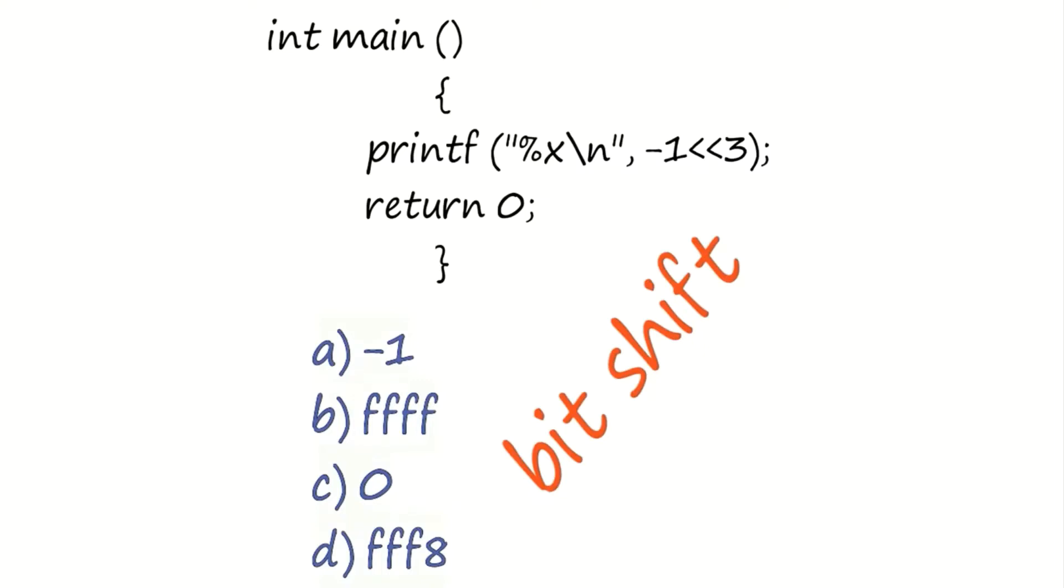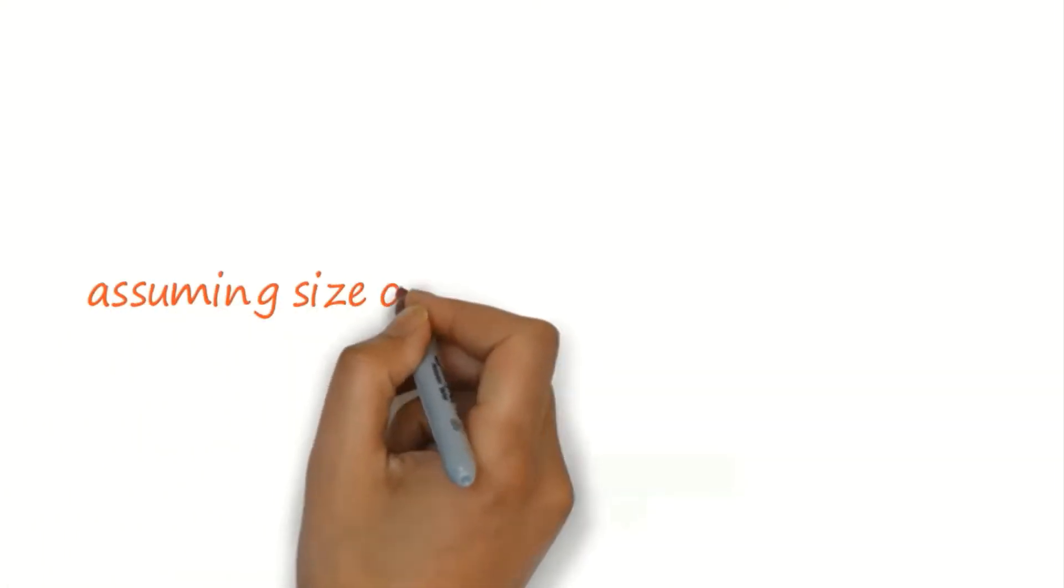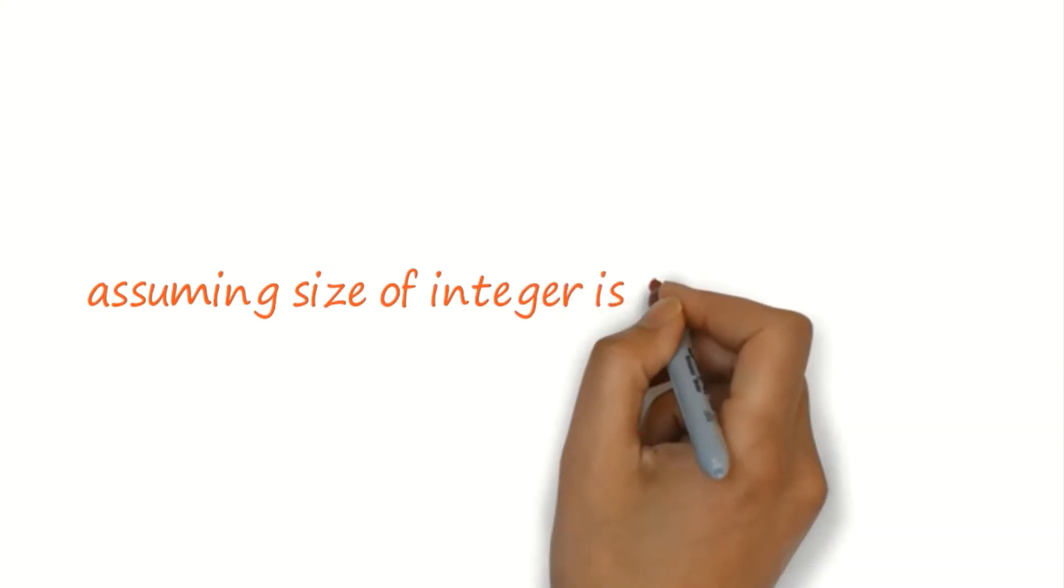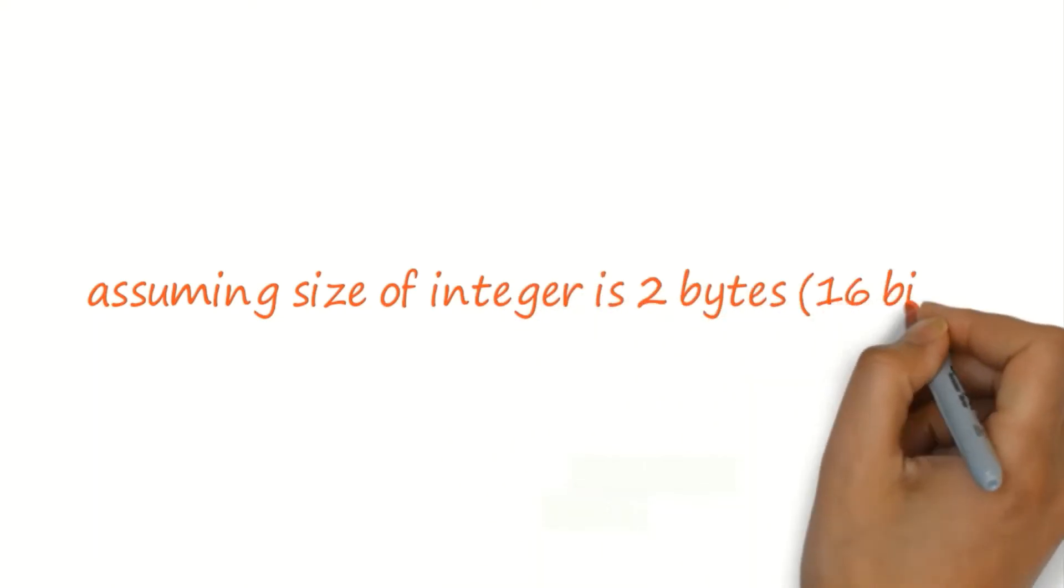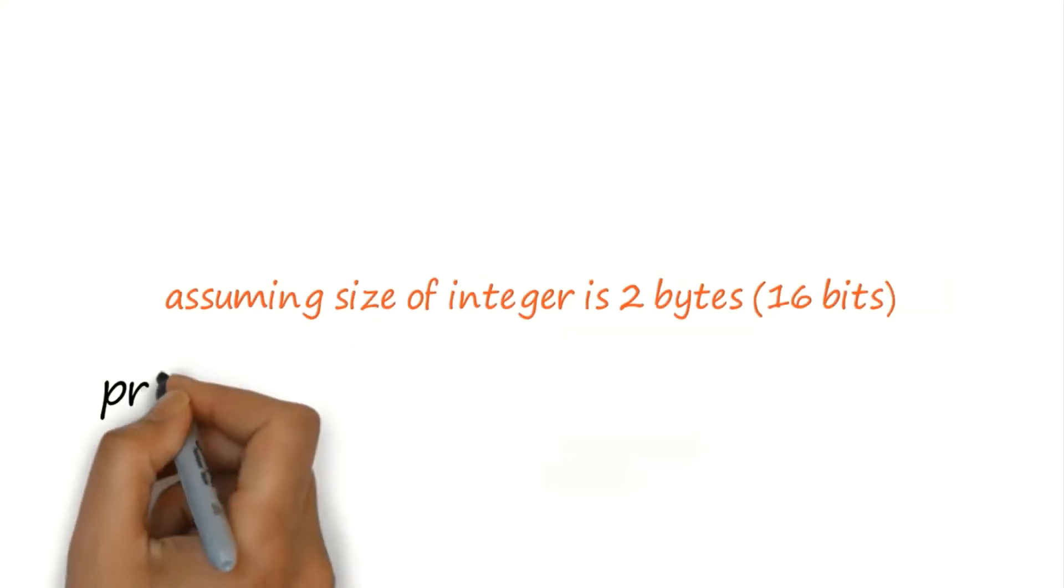Here we would need left shift to solve this problem. I'm assuming the size of an integer as 2 bytes, that is 16 bits. However, modern compilers use 4 bytes for integer representation, so in the question it should ideally be mentioned.